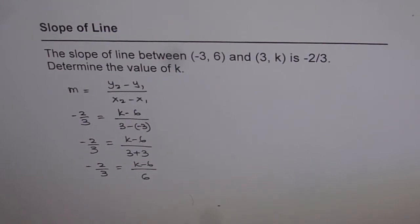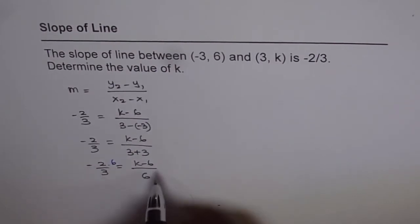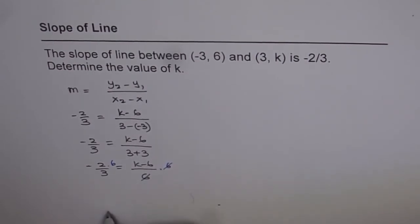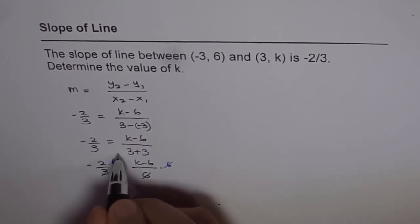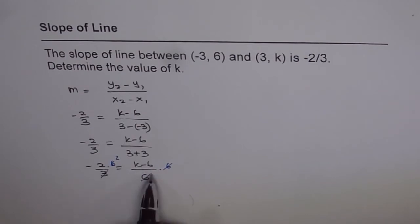Second thing is we can think about multiplying both sides by 6. In that case, this gets multiplied by 6 and this gets multiplied by 6. Then 6 and 6 cancel out and you are left with -2 times 2. So that is another alternative way of doing it. So we will follow this method now.